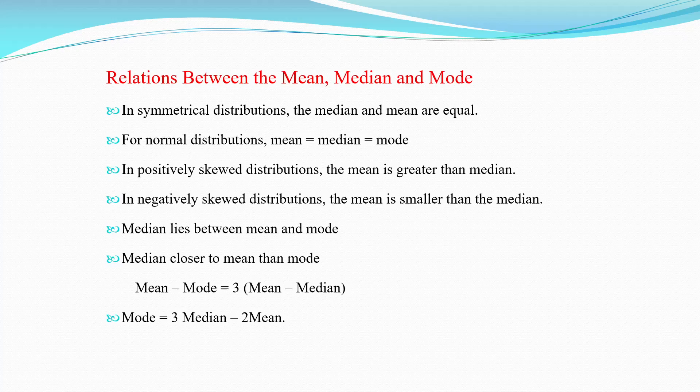Relations between the mean, median, and mode: In a symmetrical distribution, the median and mean are equal. For a normal distribution, mean = median = mode. In a positively skewed distribution, the mean is greater than the median. In a negatively skewed distribution, the mean is smaller than the median; the median lies between the mean and mode, and the median is closer to the mean than the mode. The empirical relation is: mean − mode = 3(mean − median), which implies mode = 3(median) − 2(mean).